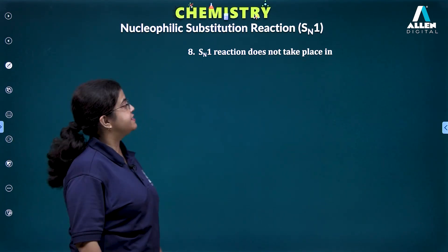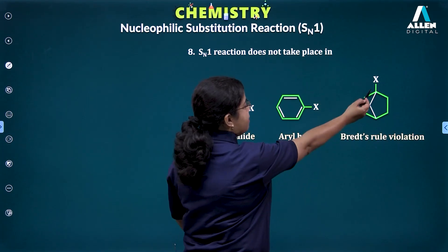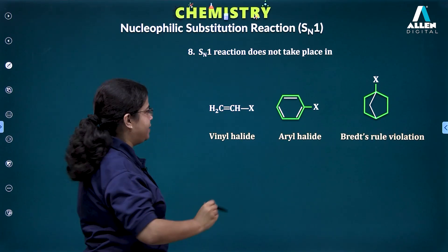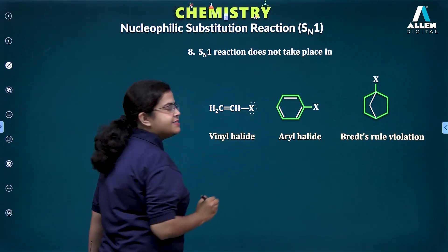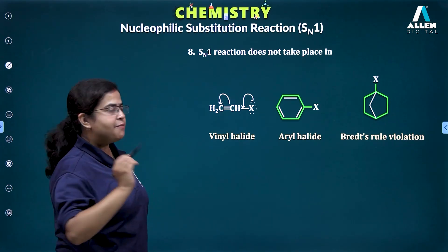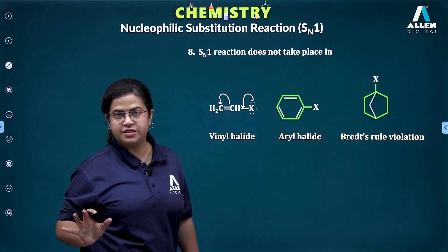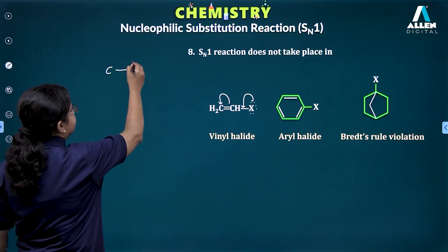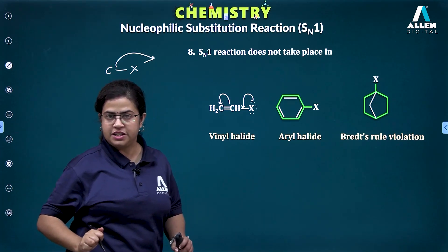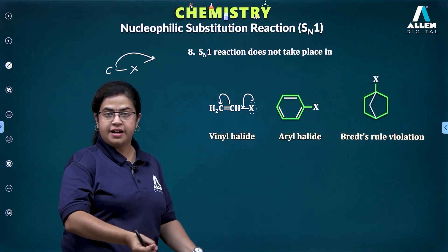SN1 reaction does not take place in the following cases: vinyl halides, aryl halides, and wherever the halogen is attached to a bridgehead carbon. In vinyl and aryl halides, the lone pairs on the halogen are involved in resonance with the ring or double bond, giving the C–X bond partial double bond character. This increases bond strength, making it difficult to cleave the C–X bond. Easier cleavage of the C–X bond means a greater rate of SN1 reaction.